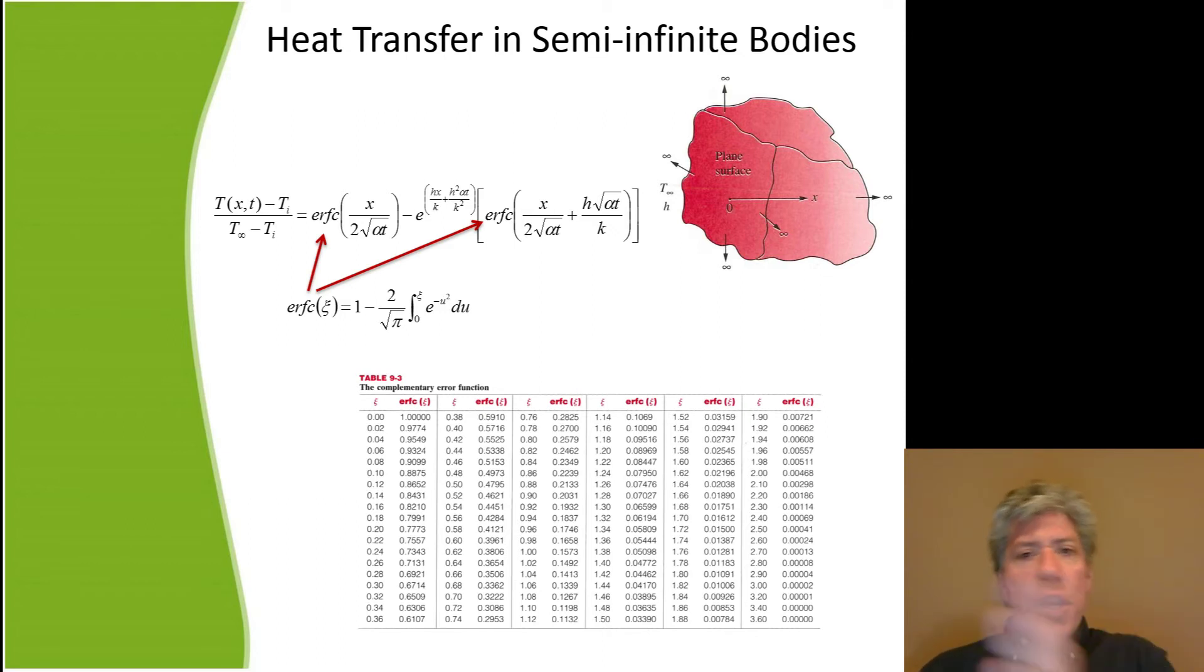Well, X is the particular depth within the body where you're interested in the temperature. Lowercase t is the amount of time that has elapsed. Alpha is the thermal diffusivity of the body itself, the material the body's made from. H is the convective heat transfer coefficient in the fluid outside, above the plane surface.